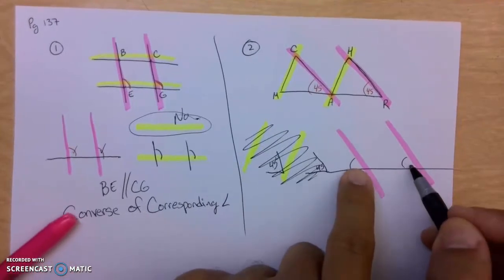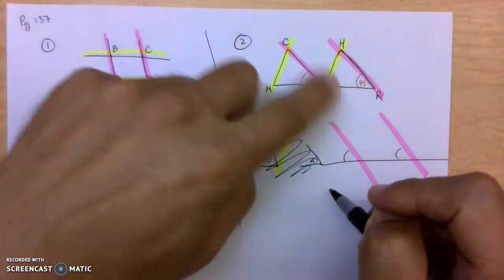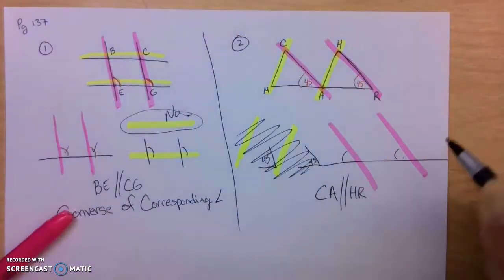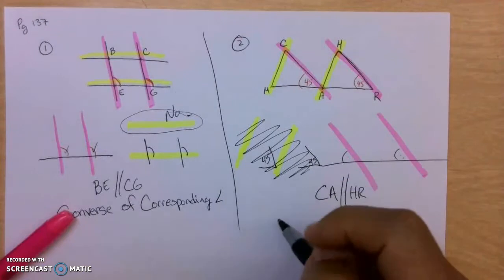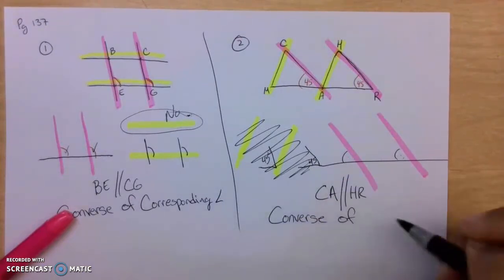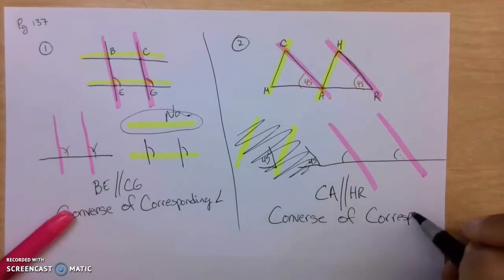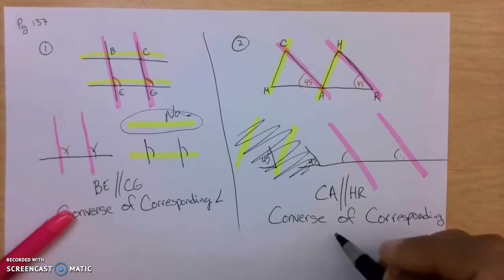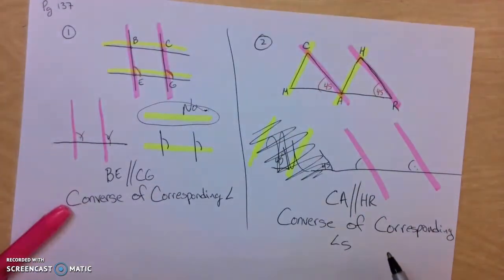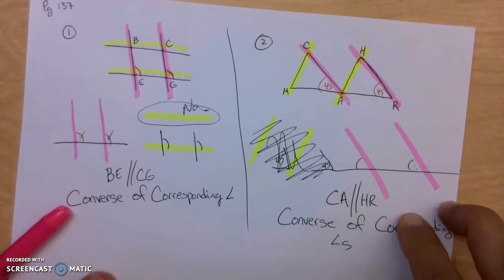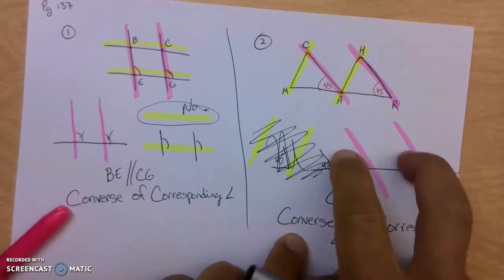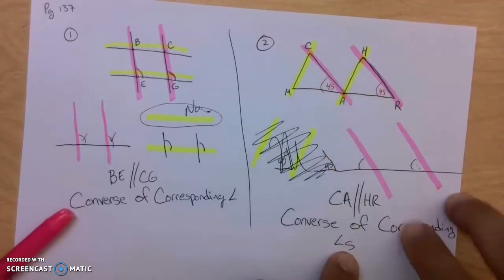It's going to be the 45, 45 — these pink lines. So CA is parallel to HR. What type of angles are they? Are they alternate interior? Are they alternate exterior? They happen to be corresponding angles. So we're going to say the converse of corresponding angles. Why the converse? Because it's the reverse of corresponding angles. Corresponding angles would say pink lines are parallel, therefore the corresponding angles are equal. When you say converse, you're saying corresponding angles are equal, therefore the lines are parallel.